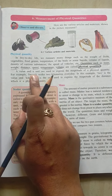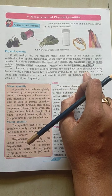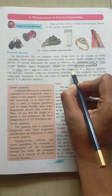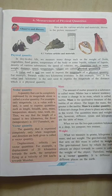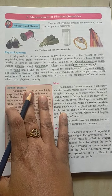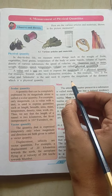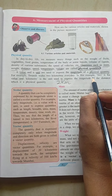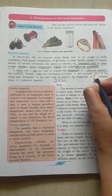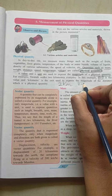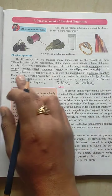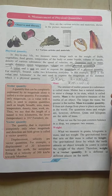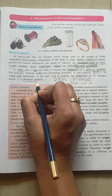A value and a unit are used to express the magnitude of a physical quantity. For example, Swarali walks 2 kilometers every day. In this example, 2 is the value and kilometer is the unit used to express the magnitude of the distance.